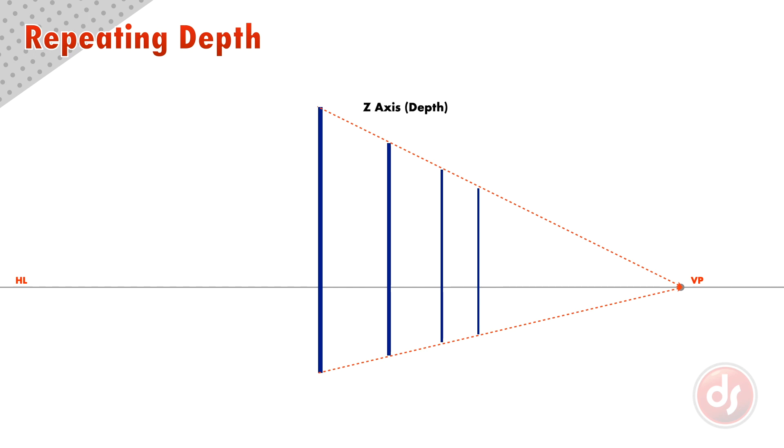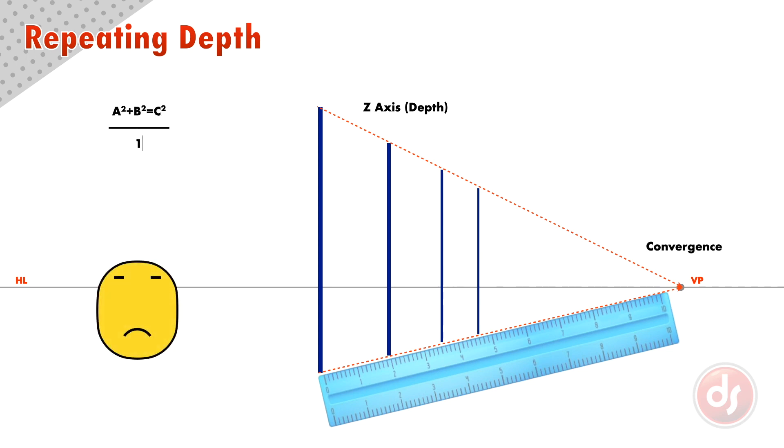Repeating the depth of objects moving on the z-axis in space can't simply be measured with a ruler, because the amount of convergence is impossible to work out mathematically. But lucky for us, there are a few simple steps to repeat depth accurately in space.